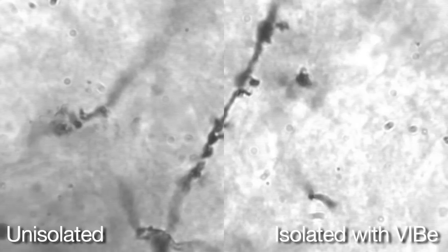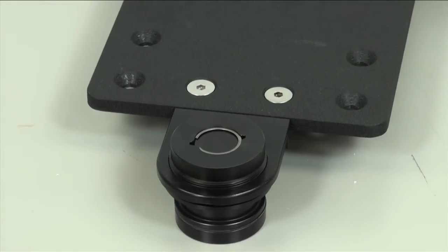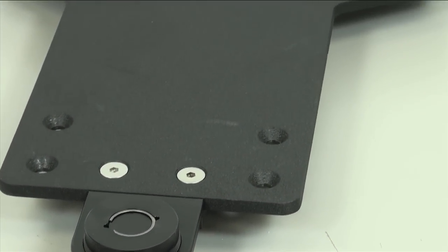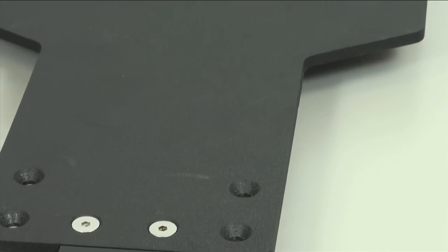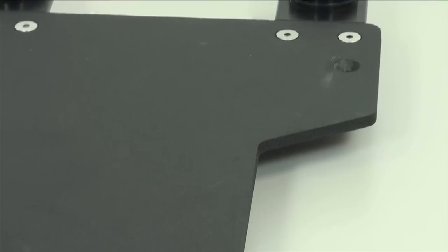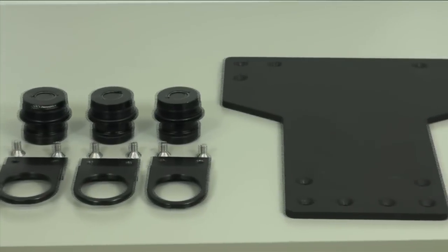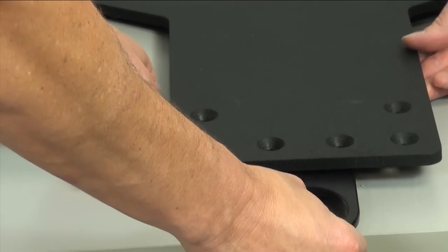The VIVE series of isolation base plates provides hundreds of configurations, depending on the size and shape of your payload, and custom variations are also available. A typical installation would consist of a VIVE base plate, three or four IB isolation bearings, and their respective mounting brackets. Integrating the Newport VIVE is accomplished in three easy steps.